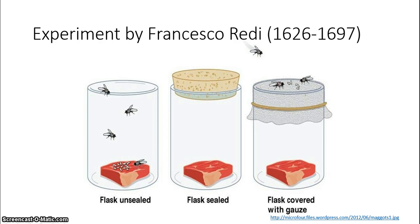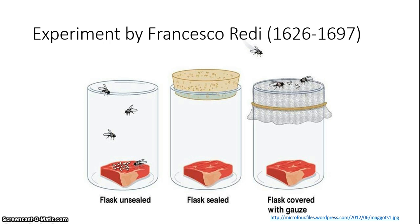This was not conclusively tested until Francesco Redi came along in the 1600s. He had a flask full of food, and if you left it unsealed, you saw flies all over it and after a while maggots appeared. If you left the flask sealed, no flies came because they were not attracted to the smell. But if the flask were covered in gauze, and if the idea of spontaneous generation were true, then maggots would still appear — but they did not. The maggots were the result of eggs laid by flies on top of the gauze, thereby discrediting the idea of spontaneous generation.